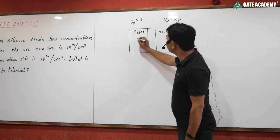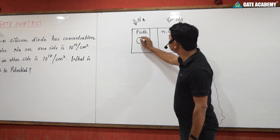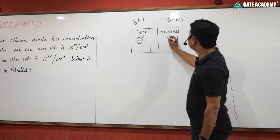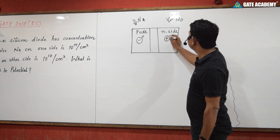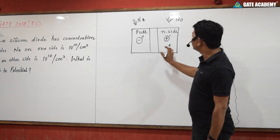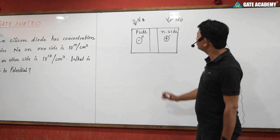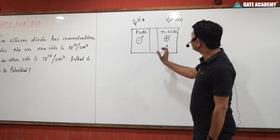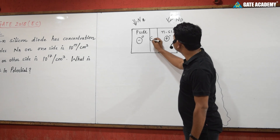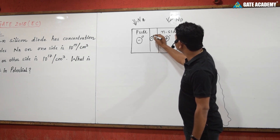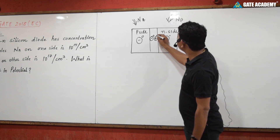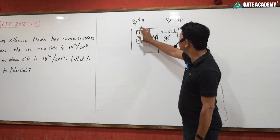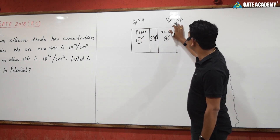The acceptor atom is a negative ion associated with one hole, and the donor atom is a positive ion associated with one electron. When this is in open-circuited condition, at the center of the junction there is recombination. One acceptor atom has one hole and one donor atom has one electron.